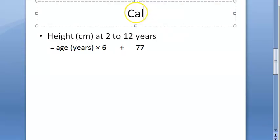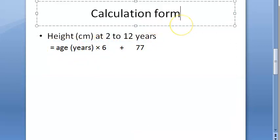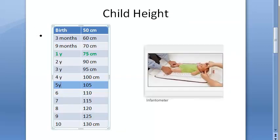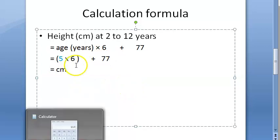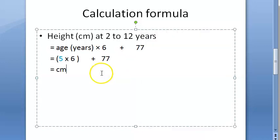There is a formula for 2 to 12 years: age in years multiplied by 6, plus 77. For example, at 5 years: 5 × 6 = 30, plus 77 = 107 centimeters.